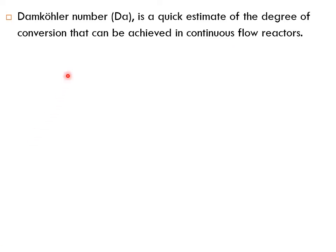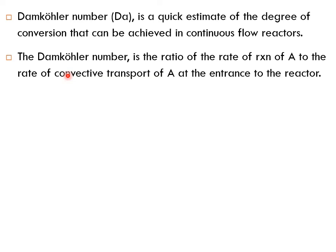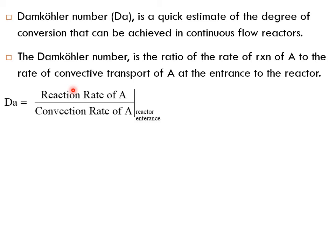Let's look at the Damköhler number. The Damköhler number is a quick estimate of the degree of conversion that can be achieved in continuous flow reactors. So if you look at the Damköhler number, you can tell if you're going to get a high conversion or not. The Damköhler number is the ratio of the rate of reaction of A to the rate of convective transport of A at the entrance of that reactor. It's a ratio, a comparison between the reaction rate of A divided by the convective rate of A, both evaluated at the reactor entrance.